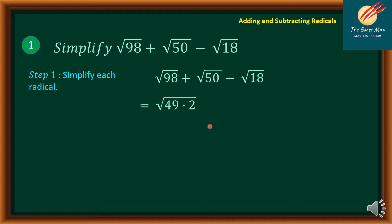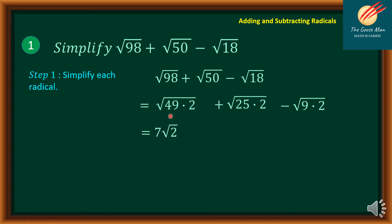For 50, we have 25 times 2, while for 18 it is 9 times 2. Then extract the root of 49, which is 7, and leave 2 as the radicand. Similarly, we get 5 square root of 2 and 3 square root of 2.